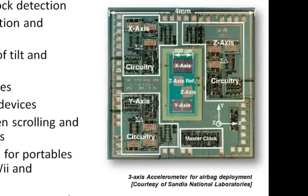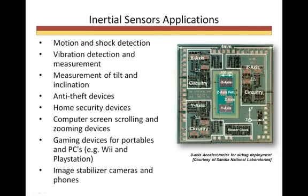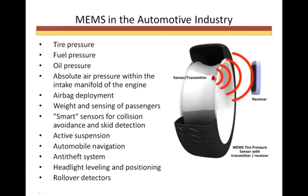This is a 3D accelerometer used in automobiles to sense a collision and trigger the airbag. One of the industries that embraced MEMS early on was the automotive industry. Each automobile manufactured today has over 100 MEMS components. MEMS are used to measure tire and fuel pressure, and the weight and sensing of passengers. Today's cars can sense if there is a passenger in the front seat and an estimation of the passenger's size. Cars also have MEMS sensors for automobile navigation, headlight leveling and positioning, and rollover detection, just to name a few.